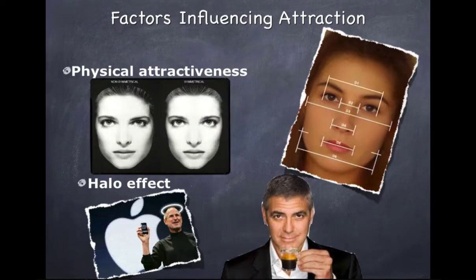Physical attractiveness is significant — people of all ages have a strong tendency to prefer physically attractive people. Six-month-old infants spend more time looking at photos of attractive people. Symmetrical faces and bodies are more attractive and sexually appealing, with a 0.93 correlation among Asian, Hispanic, African American, and white females on attractiveness ratings. There's also what's called the halo effect: the tendency to assume a person has generally positive or negative traits after observing one major positive or negative trait.